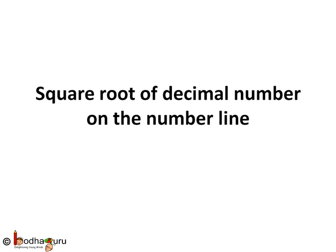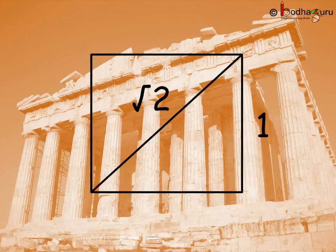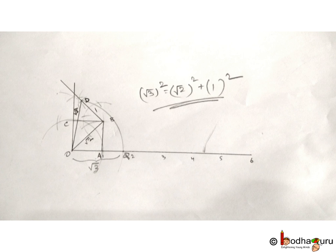Hello friends, in the previous video we saw how to find the value of square root of 2 geometrically. The method was to draw a square with 1 centimeter side, that way the diagonal will be square root of 1 squared plus 1 squared, which is square root of 2. To find the value of square root of 3...